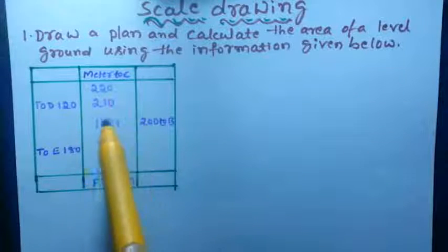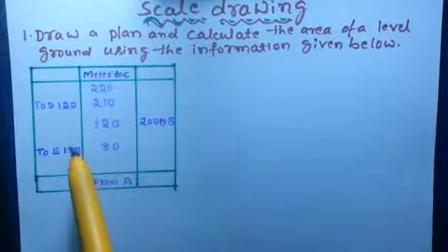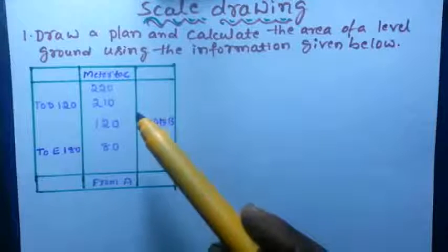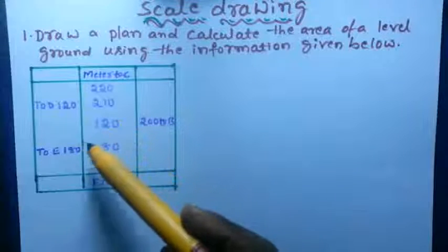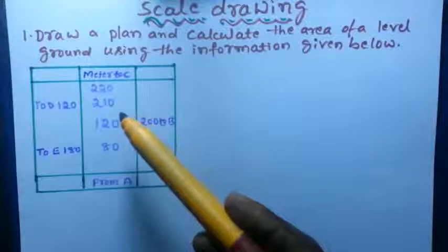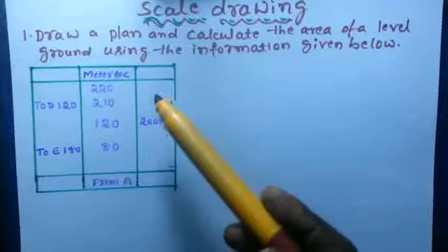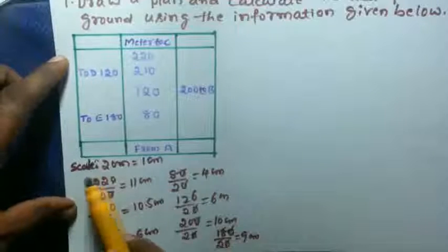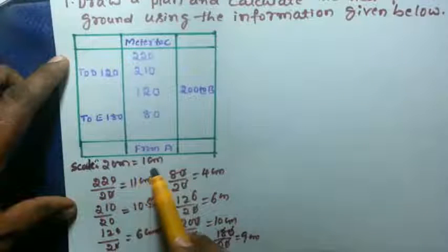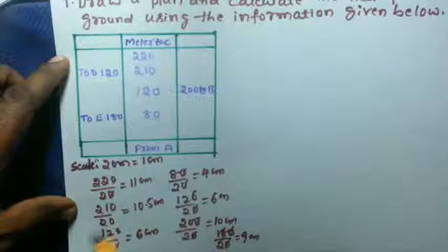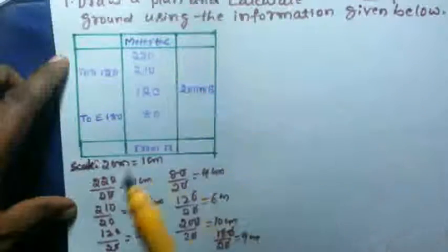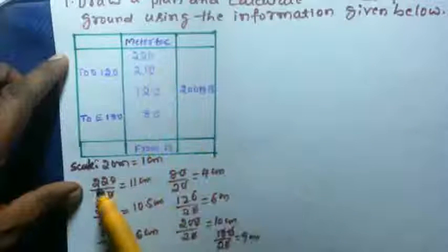You have to see these values, if you take 20 or 10 or 50, usually we will take 20. 20 meter is equal to 1 centimeter, for this problem I will take a scale 20 meter is equal to 1 centimeter.